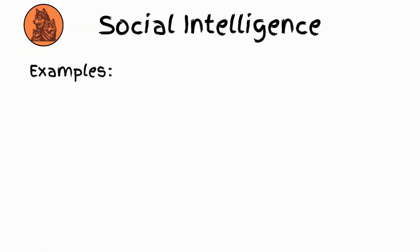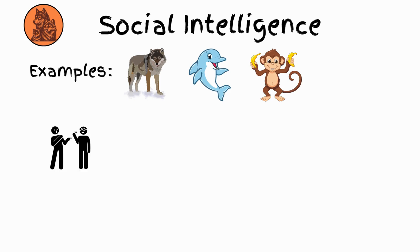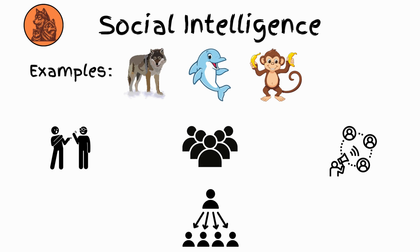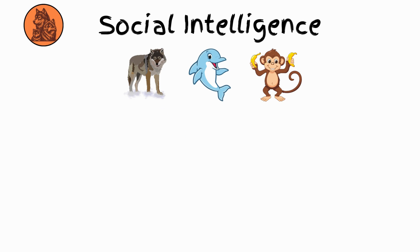Social intelligence. Examples: wolves, dolphins, monkeys. These animals can recognize their group members, communicate, and form social hierarchies. They understand group dynamics, which helps them hunt together or raise their young. They also show loyalty and create bonds that help them survive.